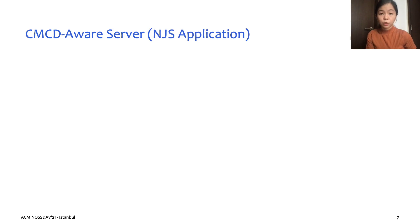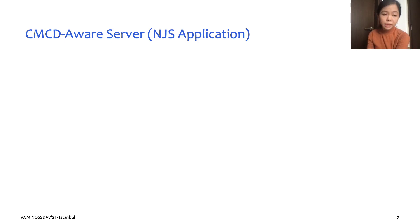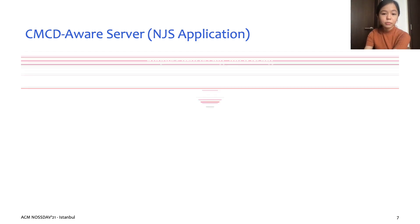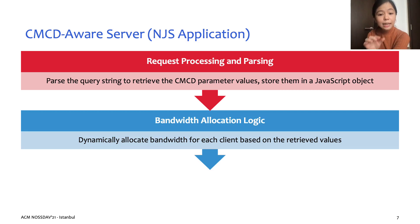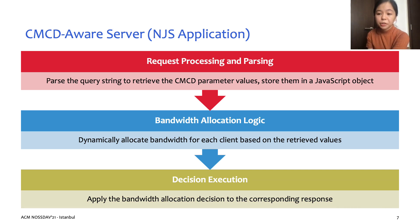We'll dive a little deeper into the workflow of our CMCD-aware server, since it contains the core of our system, which is the server-side bandwidth allocation scheme. The server runs on NGINX, which allows us to write an NJS application to implement our scheme. NJS is a subset of the JavaScript language that allows us to extend NGINX functionality. When the server first receives a client request, the NJS application parses the query string sent by the client to retrieve the CMCD parameter values and stores them in a JavaScript object. Using this client information, the bandwidth allocation logic determines the appropriate downstream bandwidth to be allocated. Finally, we use the Limit Rate Directive in the NGINX config file to apply the bandwidth limit to that particular connection.